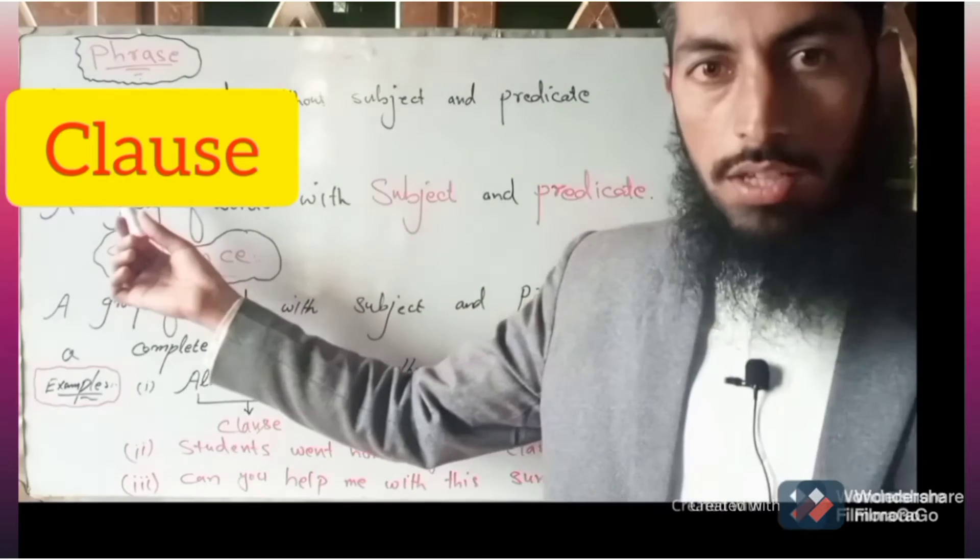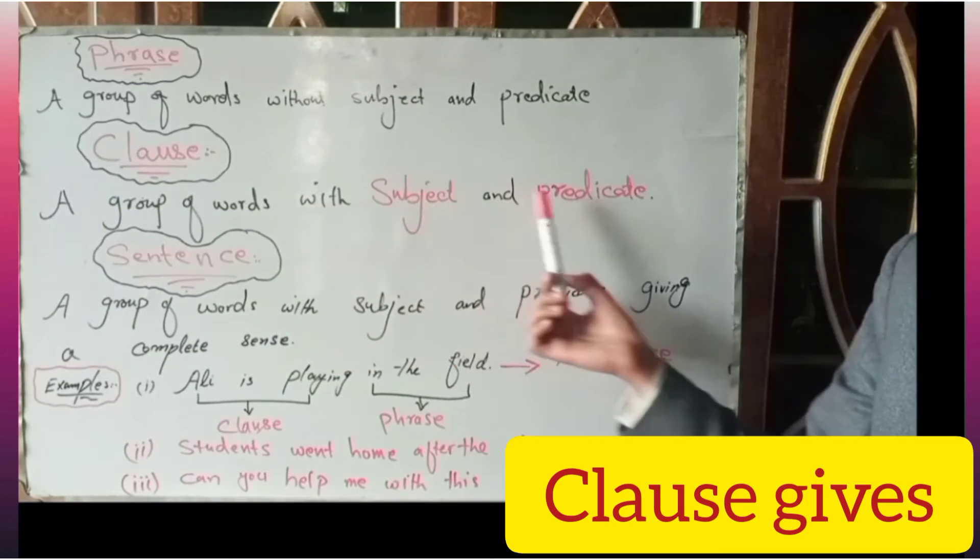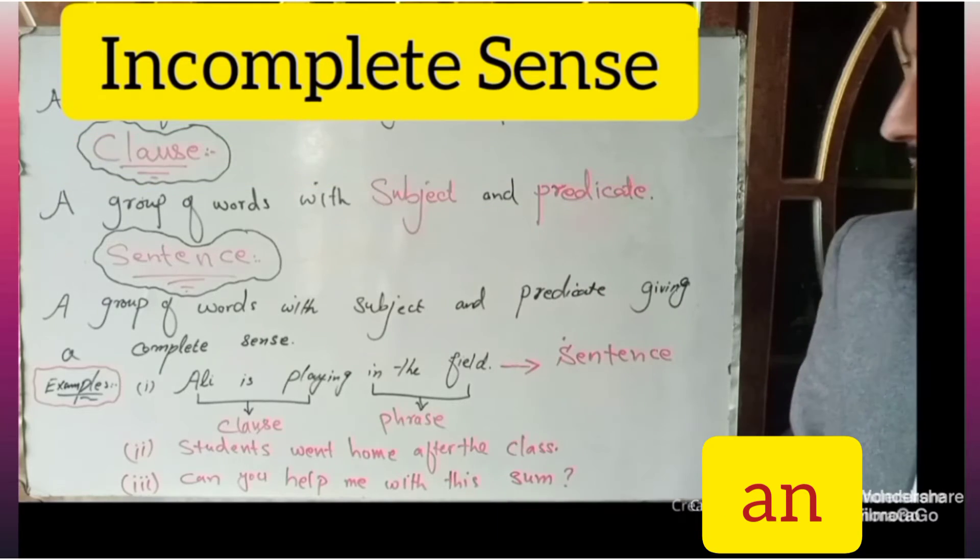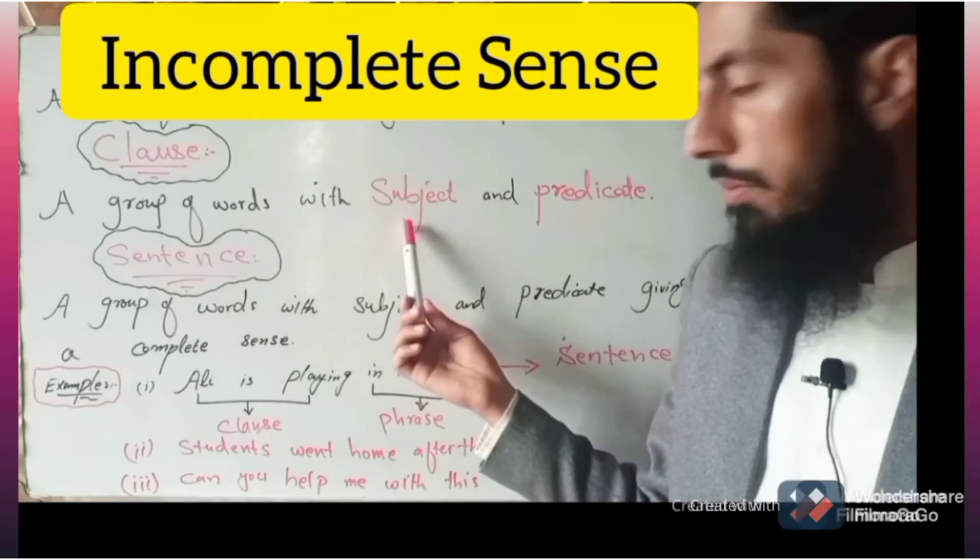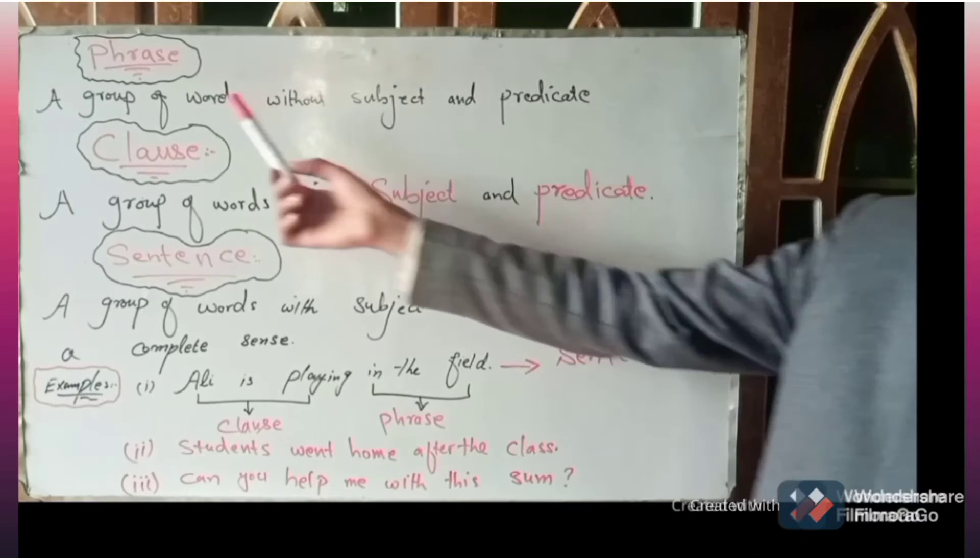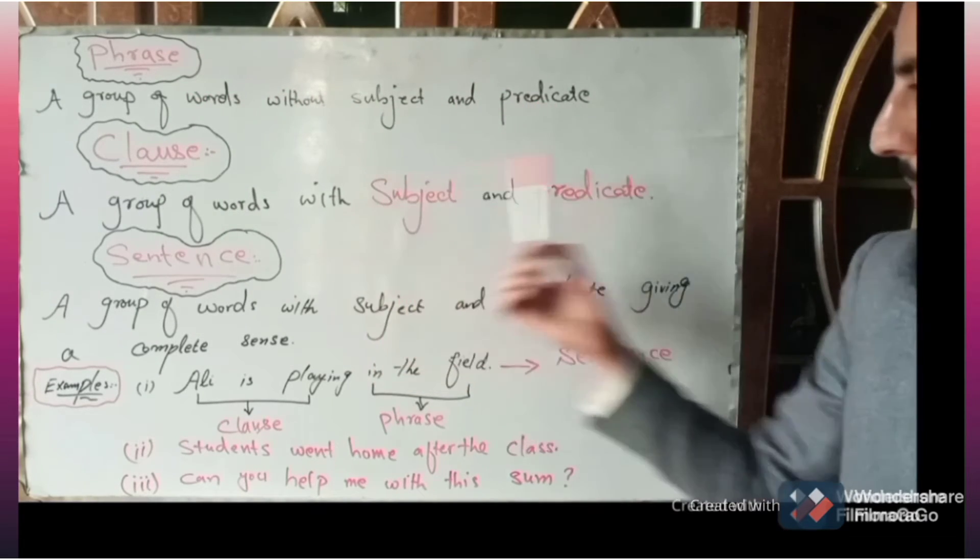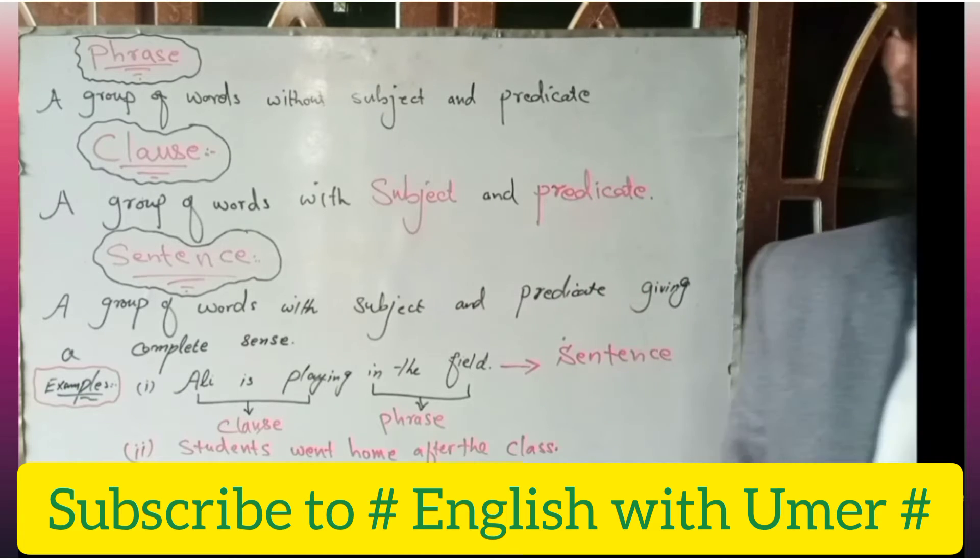Then, come to clause. A group of words with subject and predicate. And it gives some sort of sense. It's the part of sentence which has both subject and predicate. Unlike the phrase where there is no subject and no predicate, here both subject and predicate are present, but still it's not a sentence.